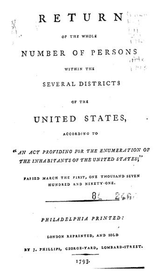Thomas Jefferson, then the Secretary of State, directed Marshals to collect data from all 13 states — Connecticut, Delaware, Georgia, Maryland, Massachusetts, New Hampshire, New Jersey, New York, North Carolina, Pennsylvania, Rhode Island, South Carolina, and Virginia — and from the Southwest Territory. The census was not conducted in Vermont until 1791, after that state's admission to the Union as the 14th state on March 4 of that year.